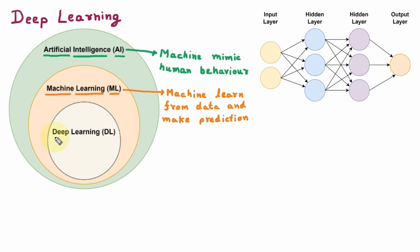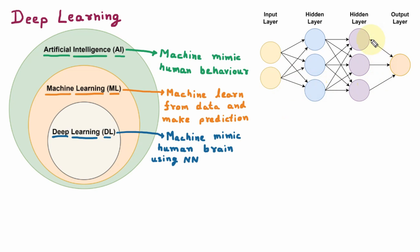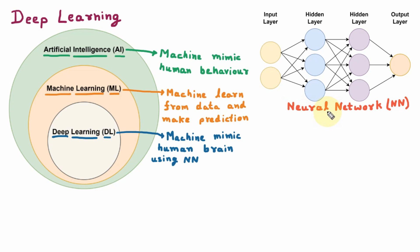Next in the diagram is Deep Learning. DL is the subset of Machine Learning. Here, the machine mimics the human brain by using Neural Networks. Deep Learning means thinking very deeply, just like our human brain does. In the brain of a human, there are various neurons and they create a network, which is called a Neural Network or NN.